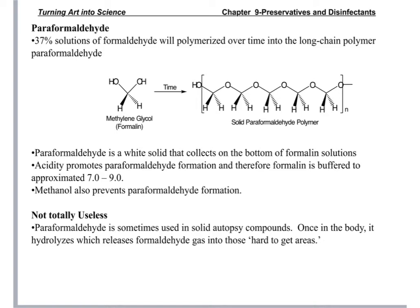Para-formaldehyde is relevant here: 37% solutions of formaldehyde will polymerize over time, and para-formaldehyde is a white solid that collects at the bottom of formalin solutions. Acidity promotes para-formaldehyde formation, so if it is buffered to a pH of 7 to 9, formation is reduced. Methanol also prevents para-formaldehyde formation. Sometimes, however, solid para-formaldehyde is useful because once in the body it releases formaldehyde gas, allowing it to reach areas you otherwise couldn't.